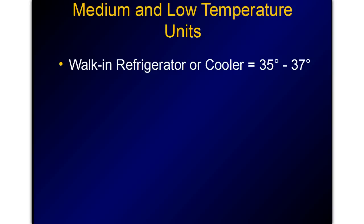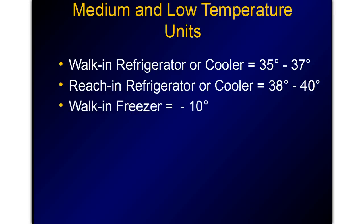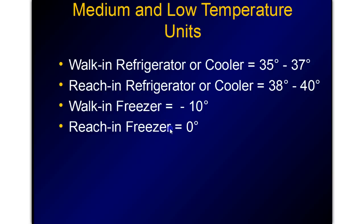We also talked about the different temperature ranges of commercial refrigeration. This course is going to discuss medium and low temperature units. Walk-in refrigerators and coolers are 35 to 37 degrees, and reach-in refrigerators or coolers are 38 to 40 degrees. Walk-in refrigerators are for large bulk, longer-term storage, while reach-in refrigerators or coolers are for convenience and daily use. Walk-in freezers are at minus 10 degrees and reach-in freezers are at zero degrees — the same concept applies, with walk-ins for long-term storage and reach-ins for daily use and convenience.